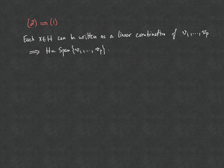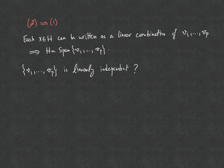We now want to show that statement 2 implies statement 1: if any vector X in H can be written in only one way as a linear combination of V1...VP, then V1...VP form a basis for H. It is clear that V1...VP span H, since any vector X in H can be written as a linear combination of V1...VP. It remains to show that V1...VP is linearly independent.